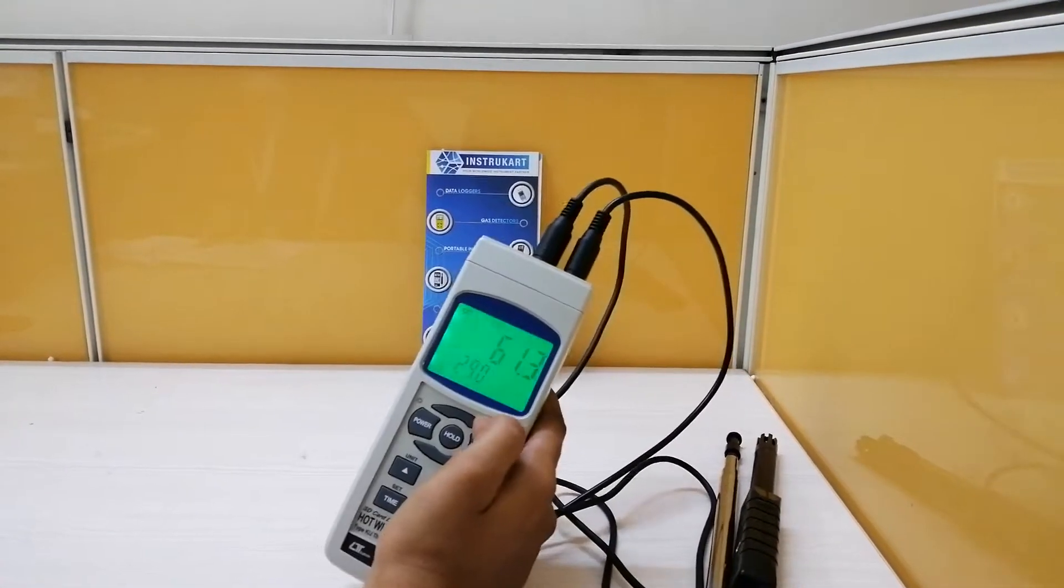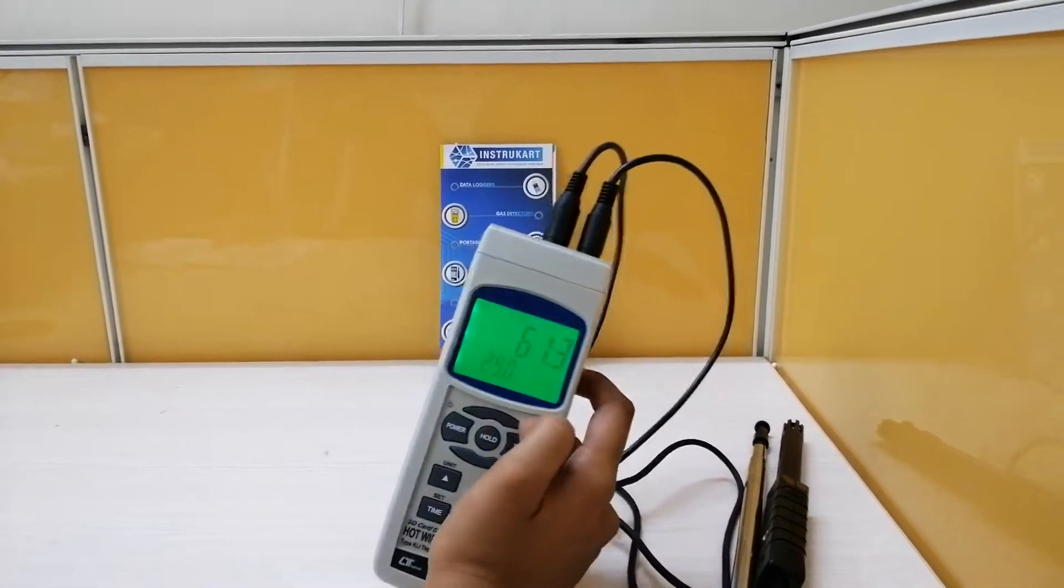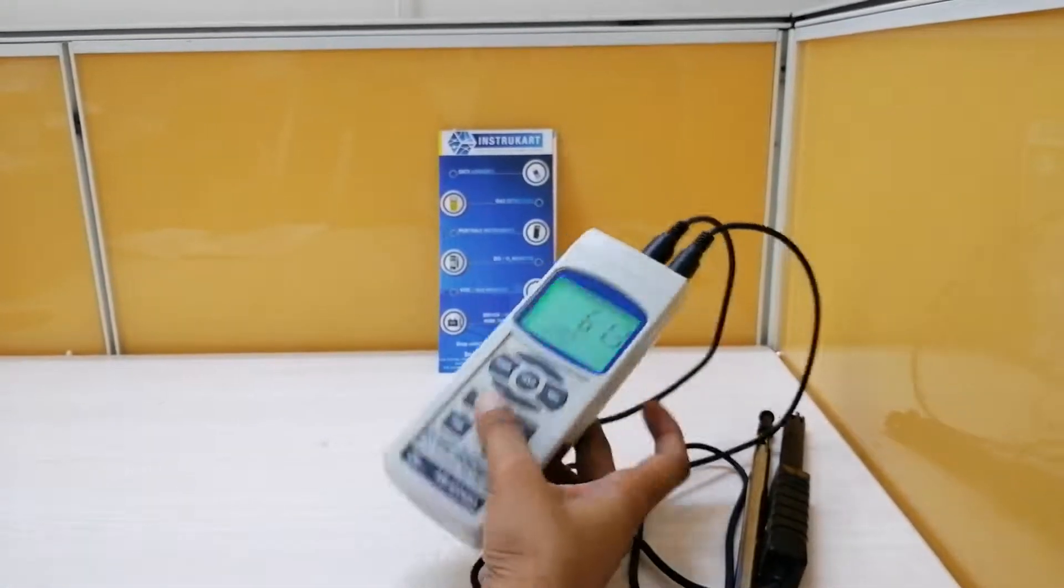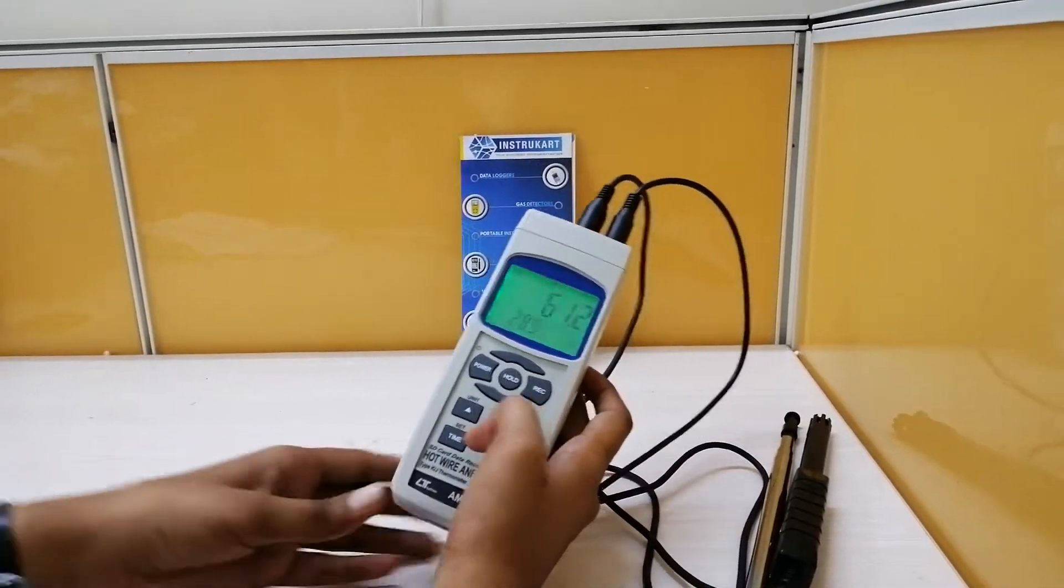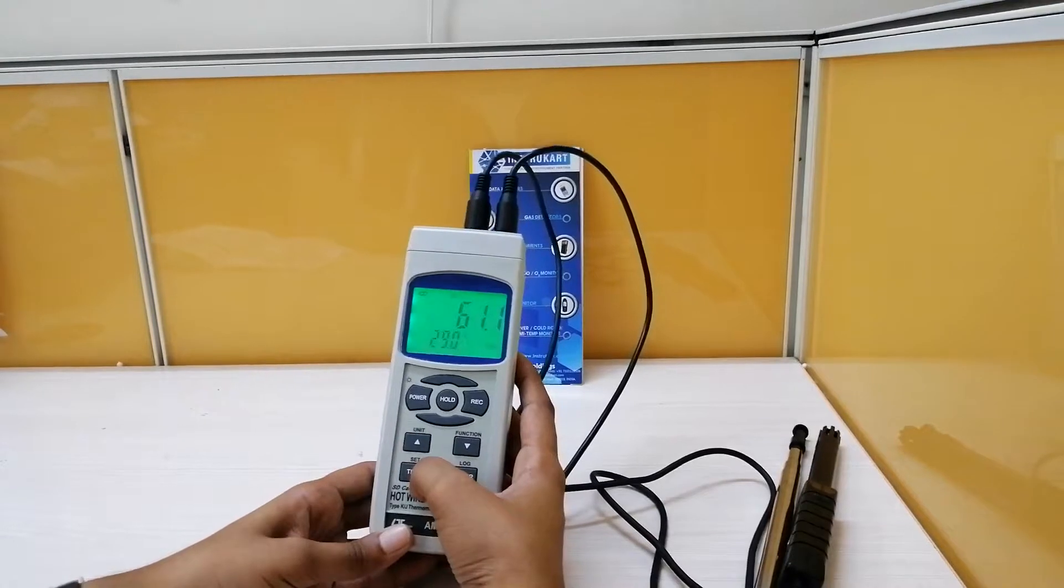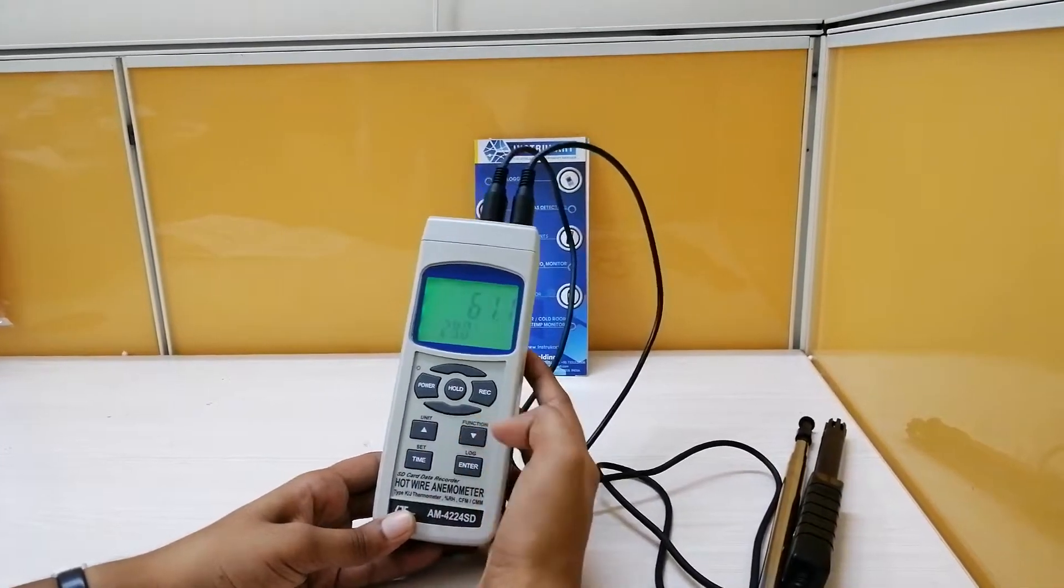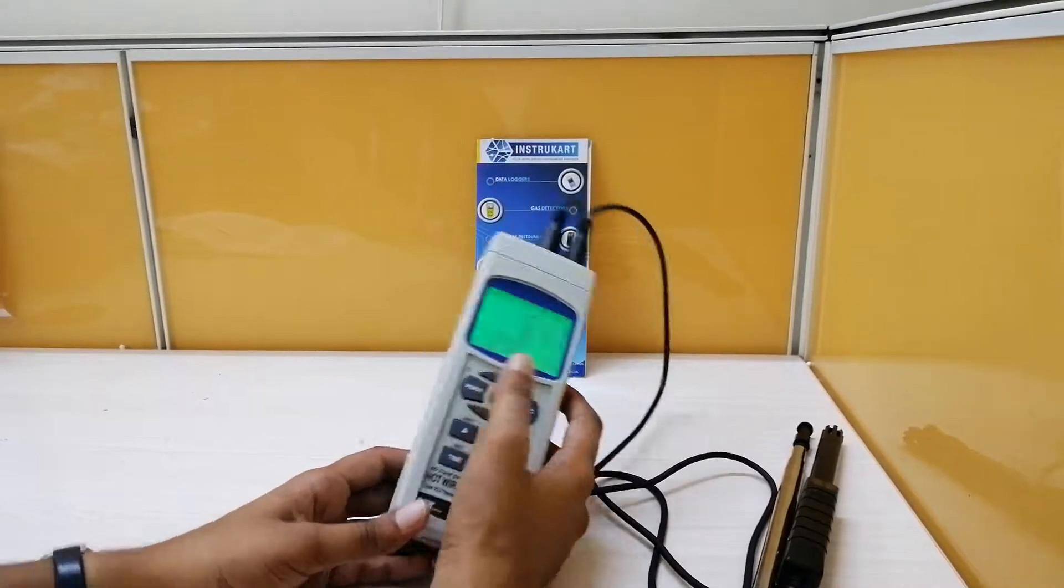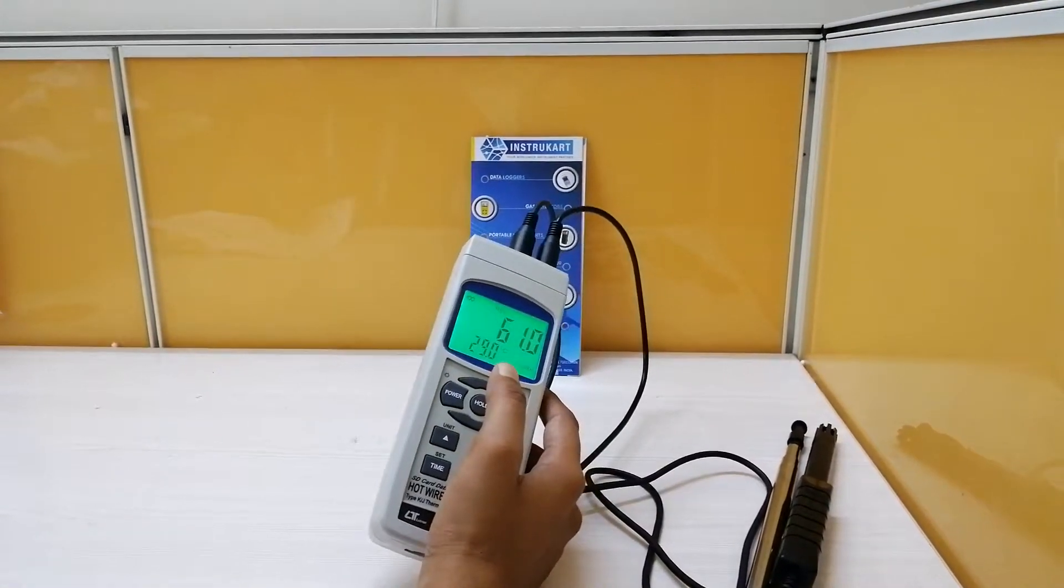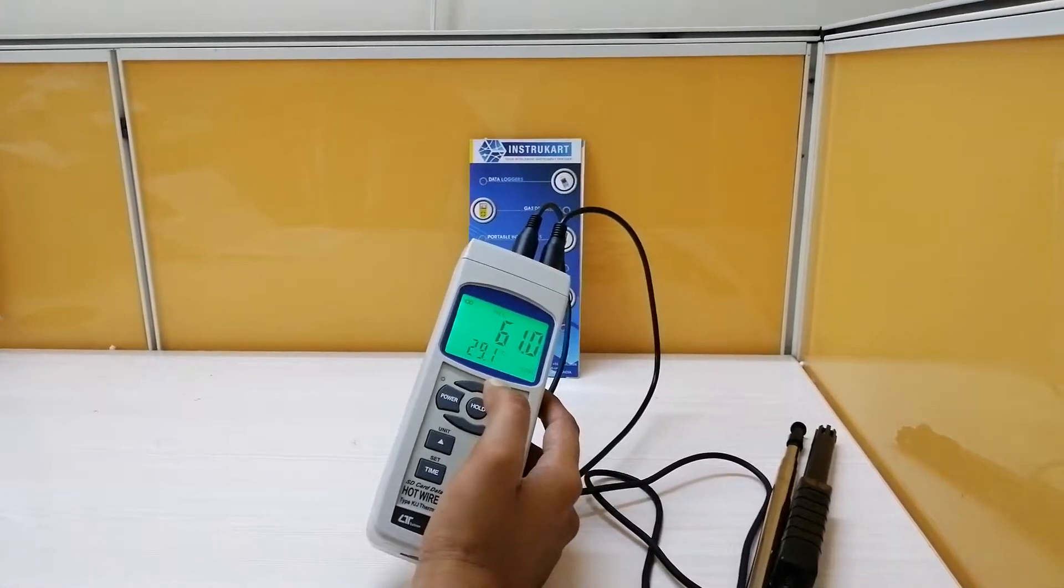You can measure the air flow in various units. You can toggle between various units. These are the switches, these are the keys for unit settings and to set the time for any other functions and to data log.